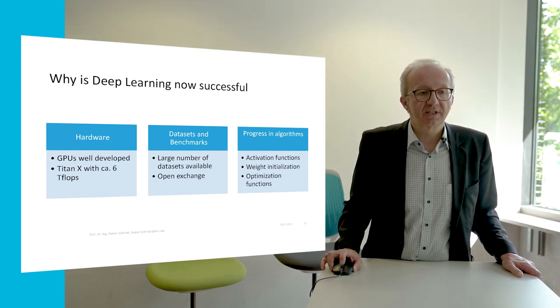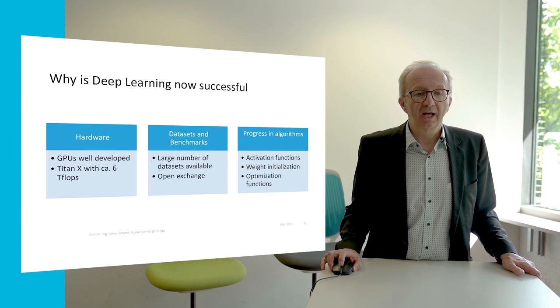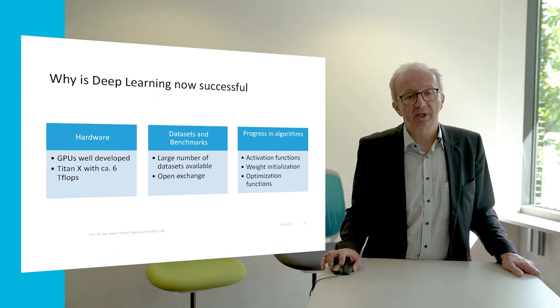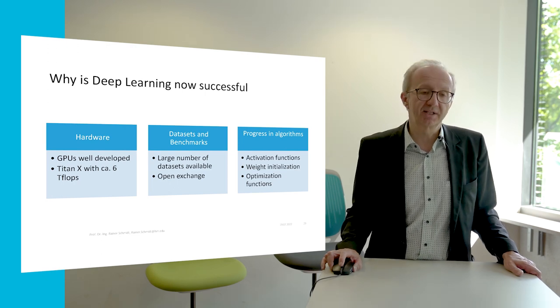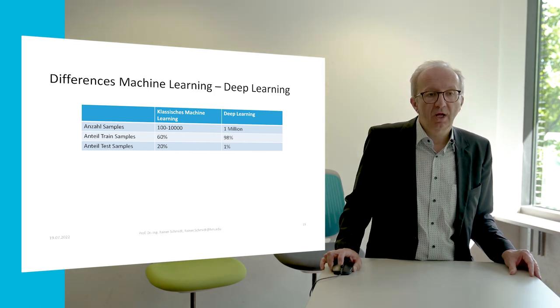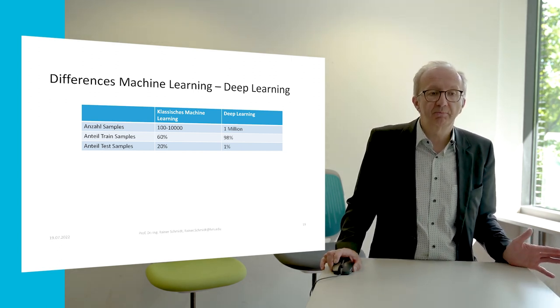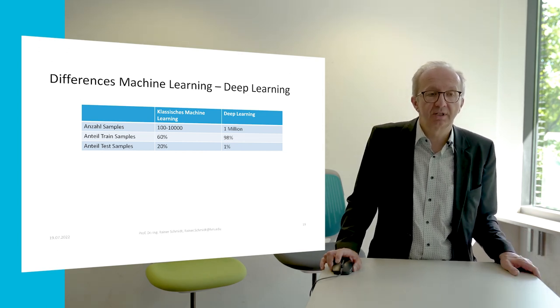Due to these advances in hardware and data sets there is huge progress in algorithms. We have very good activation functions and the weight initialization is much better than before. At this point there is probably a question: where is the difference between machine learning and deep learning? In general, machine learning works with much less data — sample sizes of 100 or up to 10,000 entries.